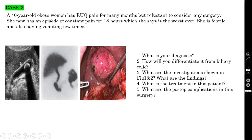What is your diagnosis? This patient has right upper quadrant pain lasting more than 18 hours and is febrile. Looking at the ultrasound, the diagnosis is acute cholecystitis. How will you differentiate this from biliary colic? Usually biliary colic pain does not last more than three hours — 18 hours cannot be biliary colic. Also, the patient is febrile, whereas in biliary colic the patient typically won't be febrile.